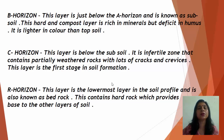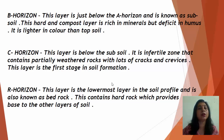Now the B horizon — this layer is just below the A horizon and is known as subsoil. This hard and compact layer is rich in minerals but deficient in humus. Because humus is absent, it is lighter in color than the topsoil. The next layer is the C horizon — this layer is below the subsoil and is an infertile zone that contains partially weathered rock with lots of cracks and crevices. This layer represents the first stage in soil formation.